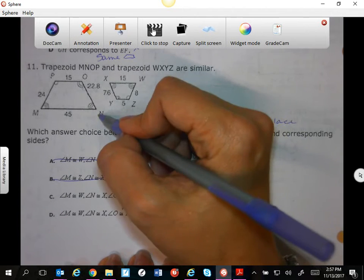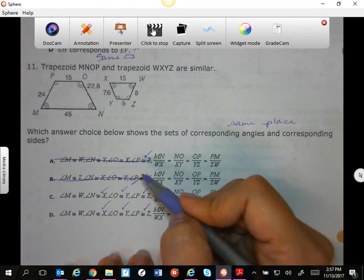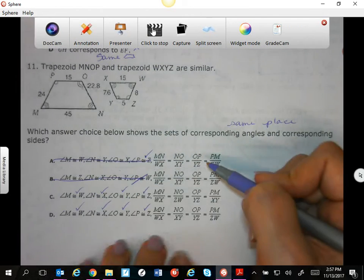Three is N and X—N and X—so that works. And this one does M and W, so now we're going to have to go to the sides.